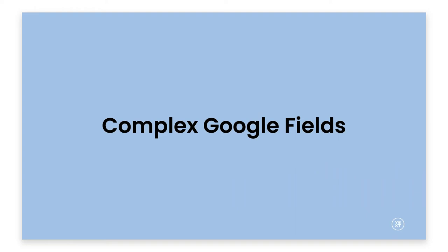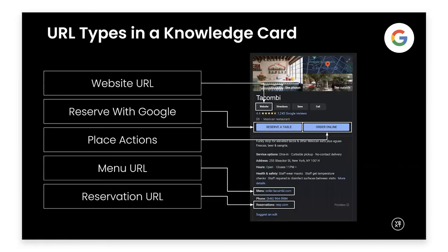Let's talk about some more complex Google fields, starting with URLs in a knowledge card. There are actually a ton of different URL types — I found an example with basically every URL type you can imagine, including five different clickable links on a single knowledge card, all powered in different ways. The first is the website URL — the top-left button — which is just your base website or local page URL. This can be directly managed through Yext to Google Business Profile. Make sure you have this filled out for all your locations.